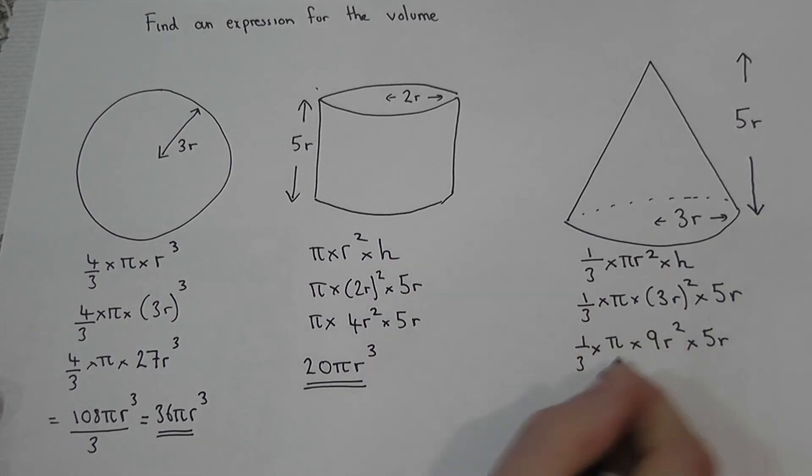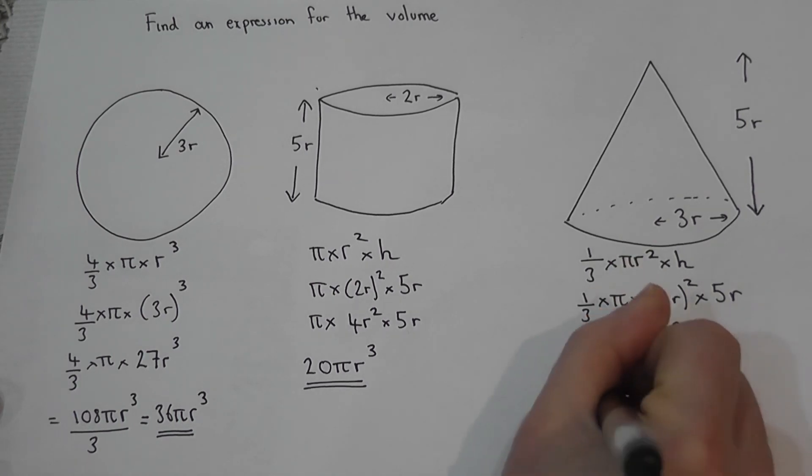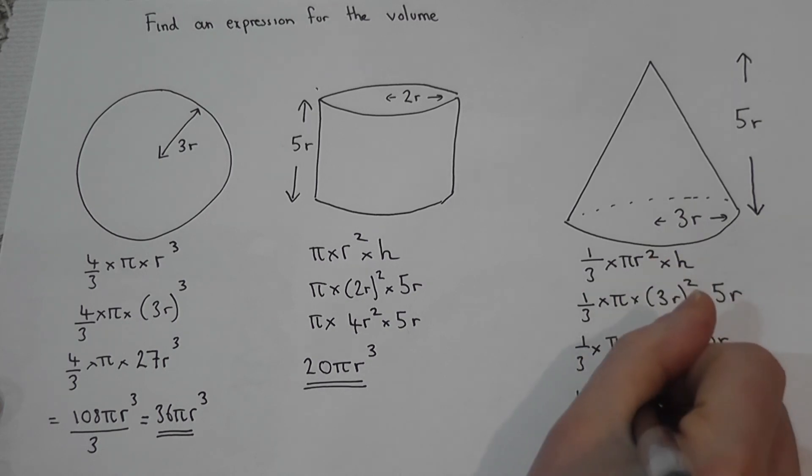So we'll times all the tops first. Now 9 times 5 is 45, one lot of 45. So we have a 45, we have a pi, and r squared times r is r cubed.